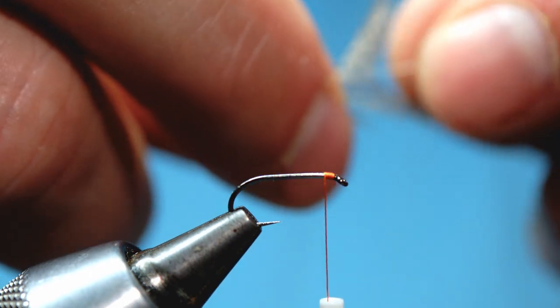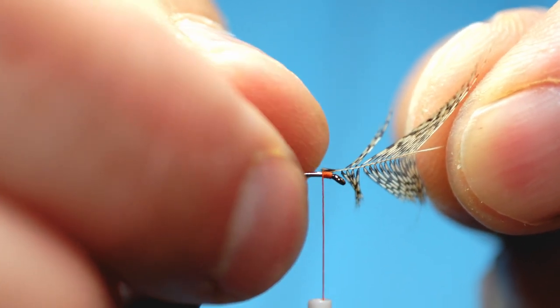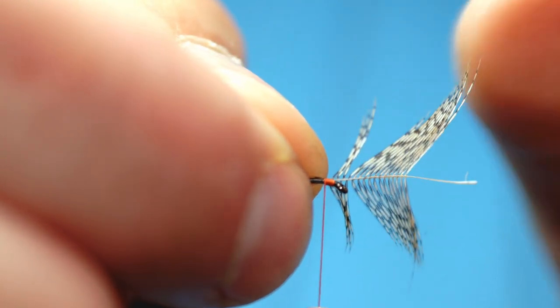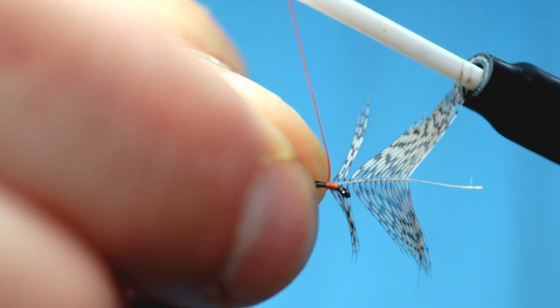To mount the hackle we just trap it between our thumb and the hook shank and take two nice firm turns of silk just to trap it in there.